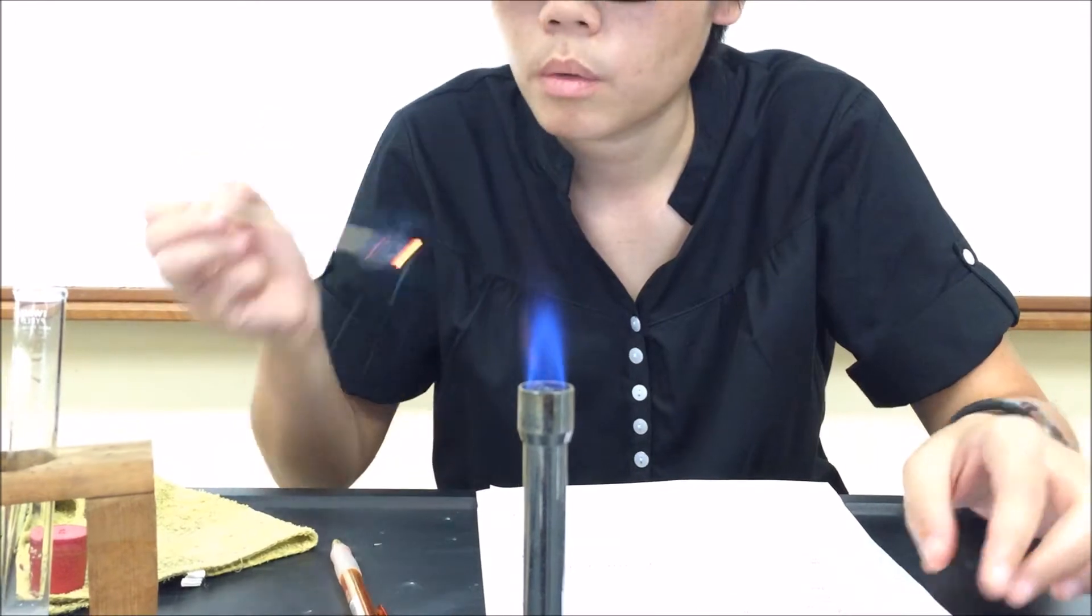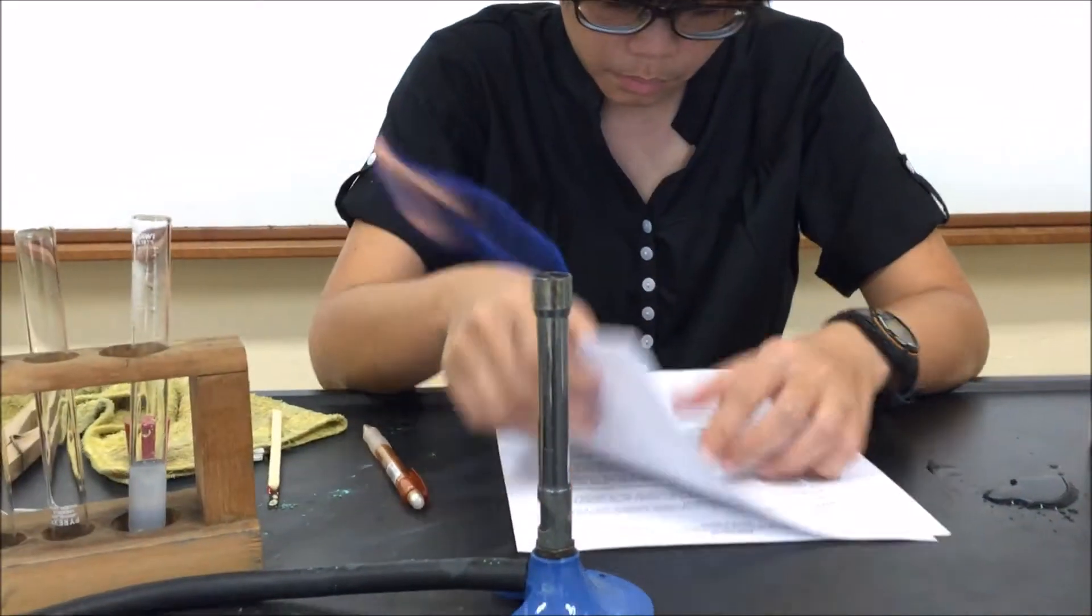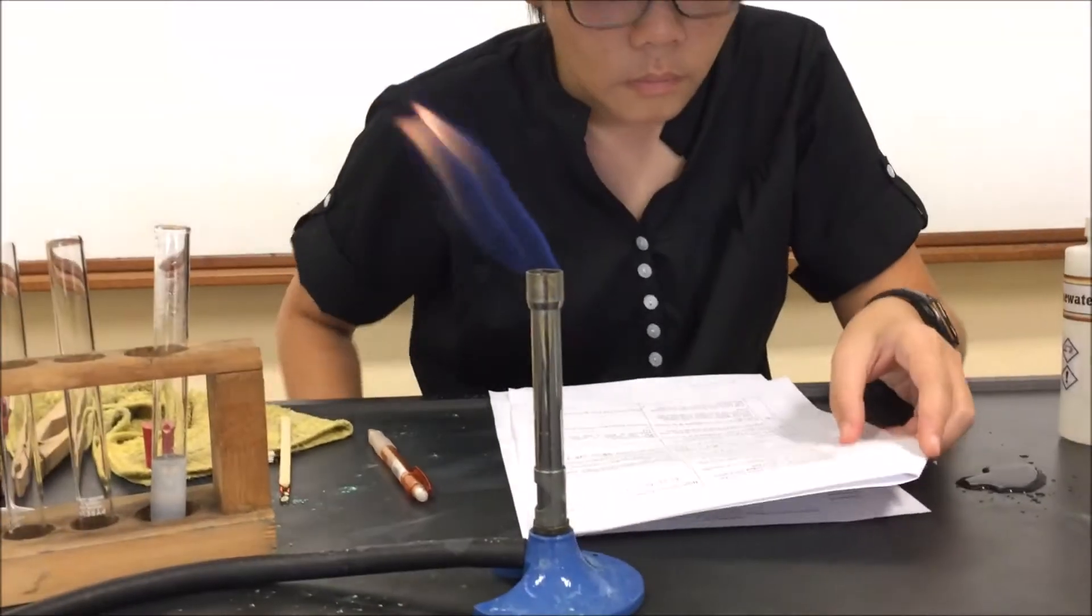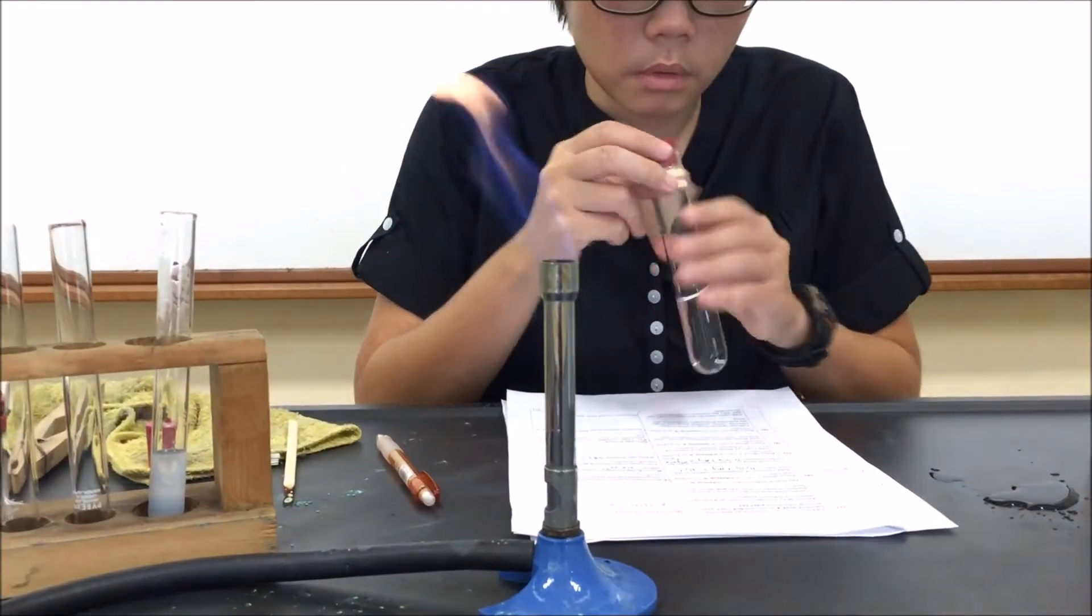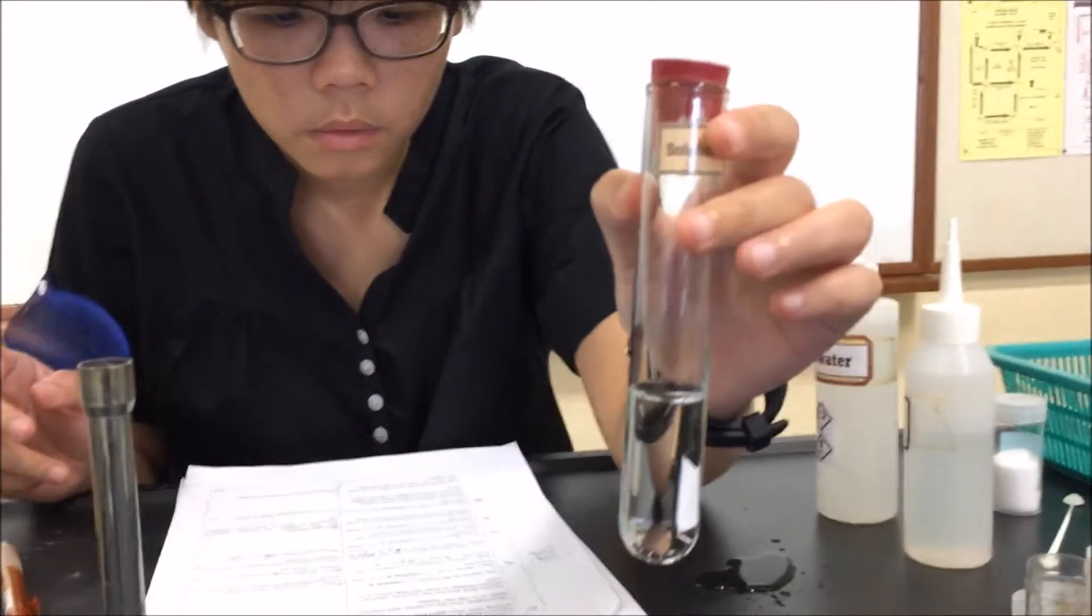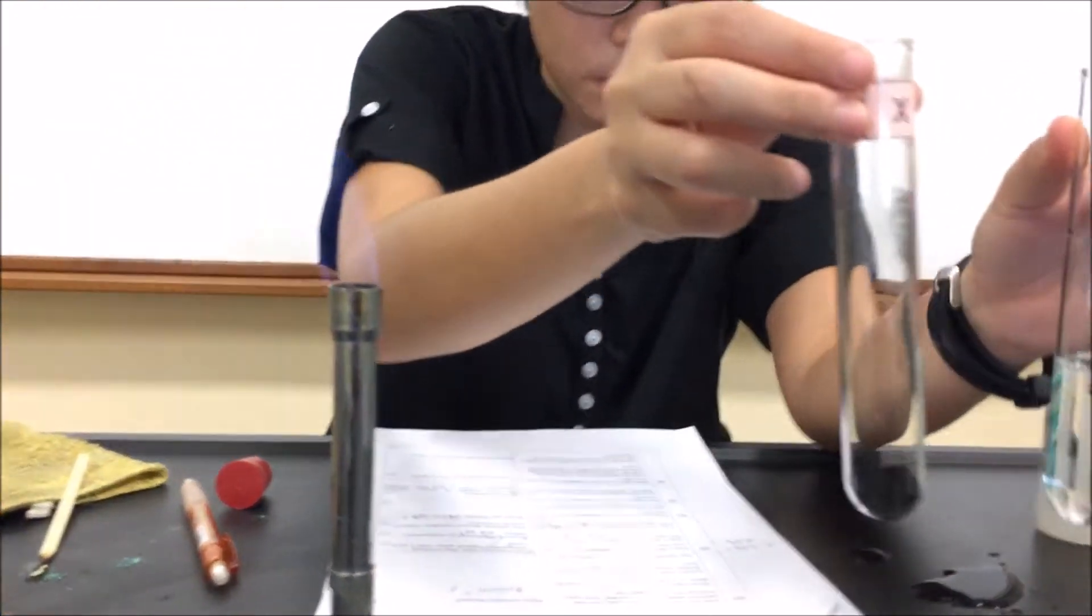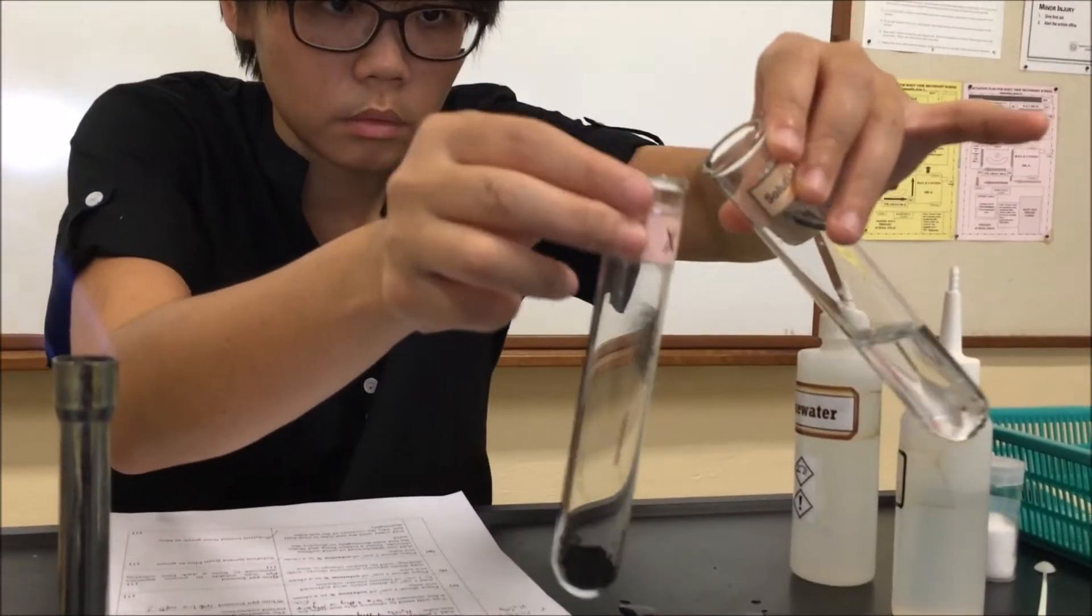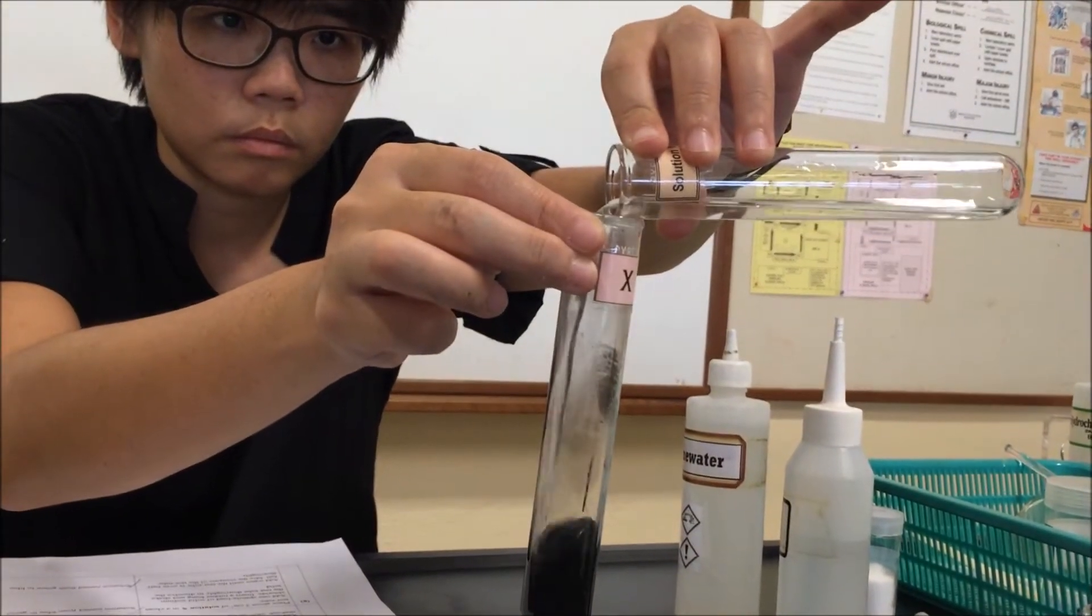Otherwise, we will go on to part C. So close the air hole to get a big flame, safety flame. Then we'll go on to part C where we have dilute sulfuric acid, and we will add the acid to the boiling tube that we have from part A.